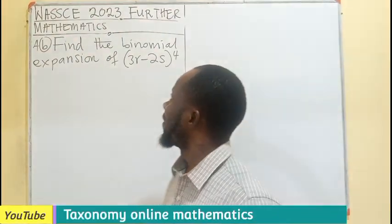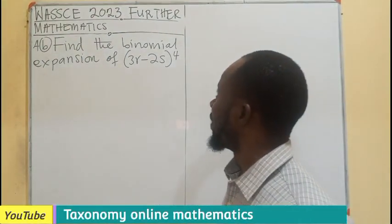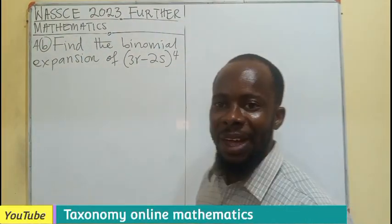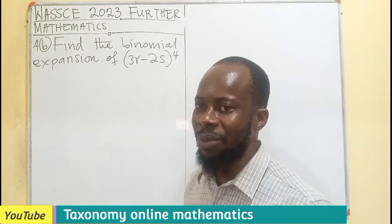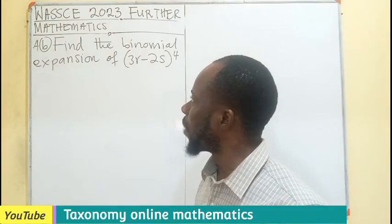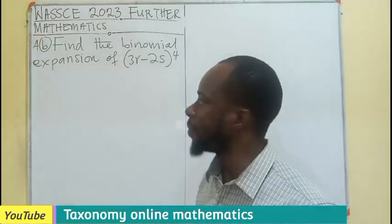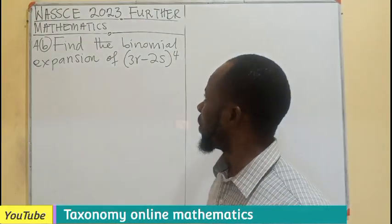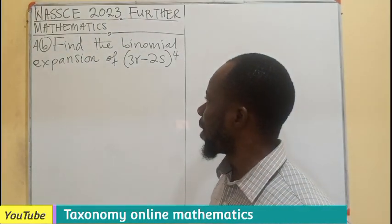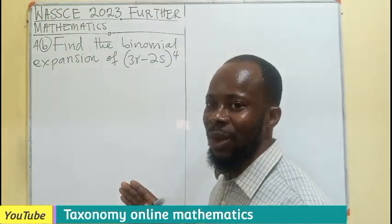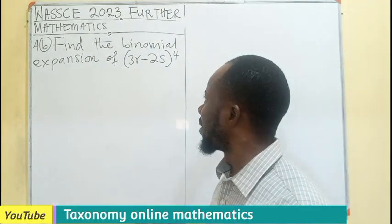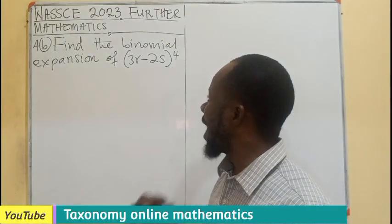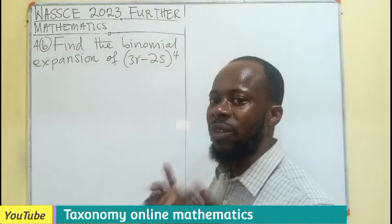Welcome. WACI 2023, FEDA Mathematics, the Elective Maths section B, question 4B. So we have to find the binomial expansion of 3R minus 2S exponent 4.